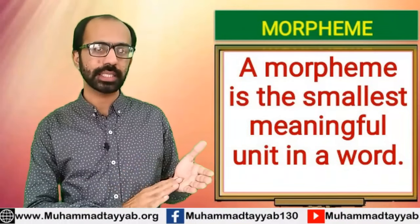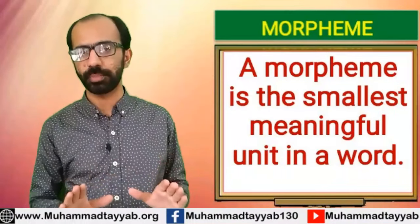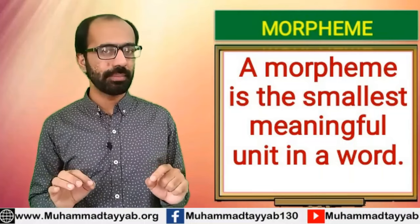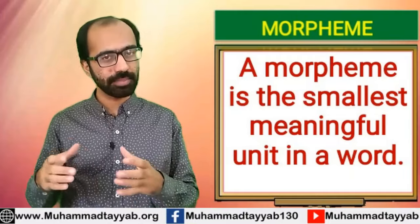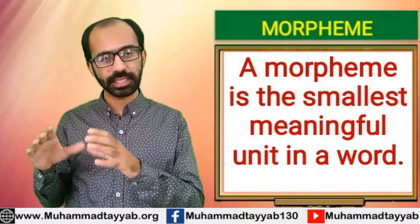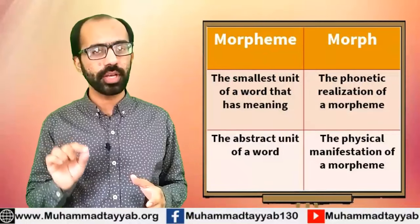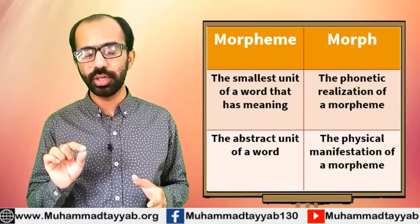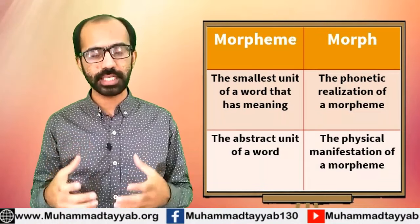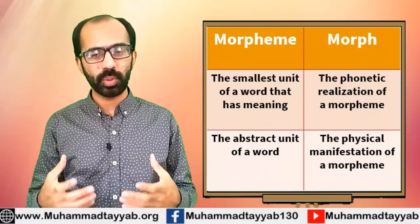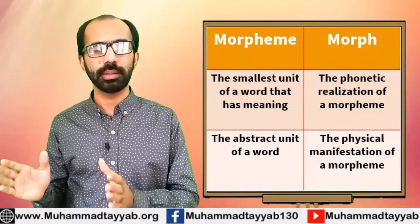The smallest meaningful unit in a word is called a morpheme. Always remember, morpheme is something abstract. It gets manifested — it takes its shape — and so it becomes a morph. Morpheme is the smallest meaningful unit that is abstract. When it takes a particular shape, when it gets manifested in a particular form, we call it morph.